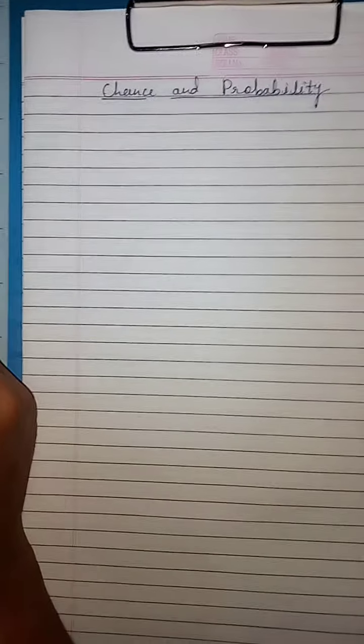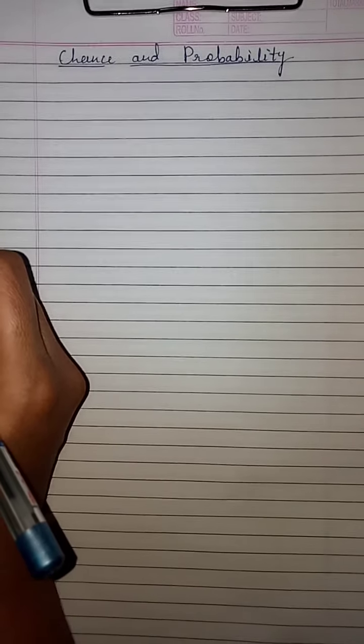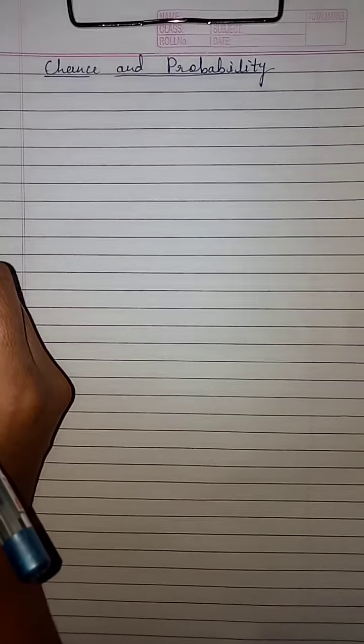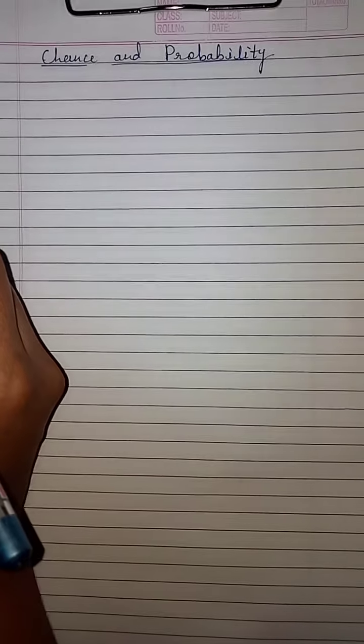Good morning children. In your previous class we studied about the bar graph and also the double bar graph. Now today we will study about chance and probability. You will often hear these words in your day to day life. We often say there is no chance of it raining today, and also say things like it is quite probable that India will win the world cup. Now let us try and understand these terms a little more.